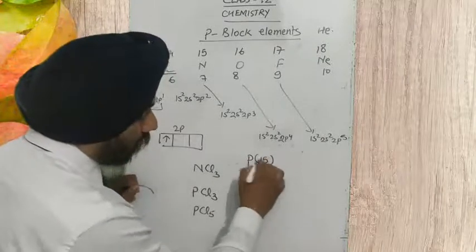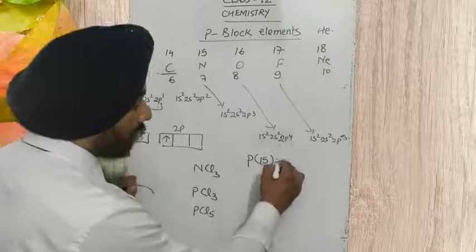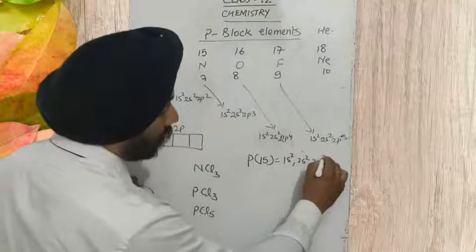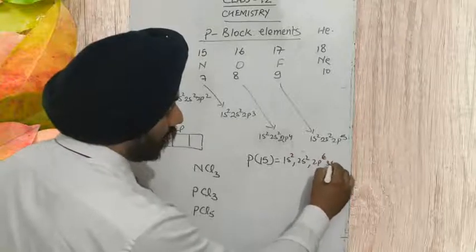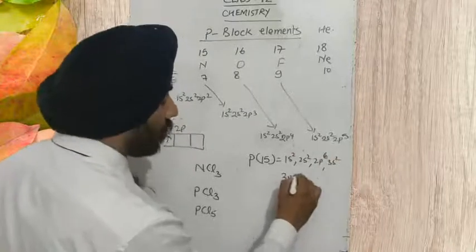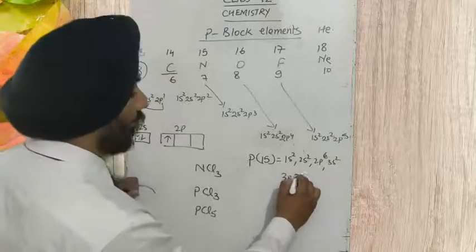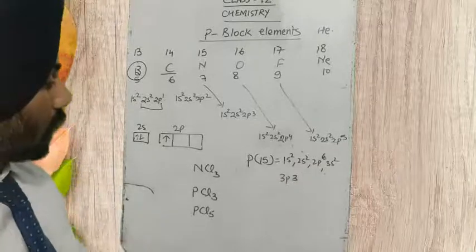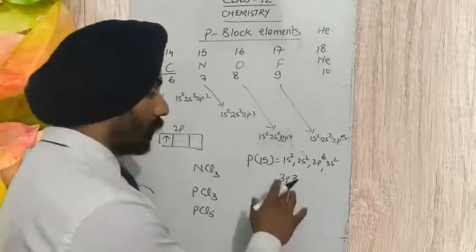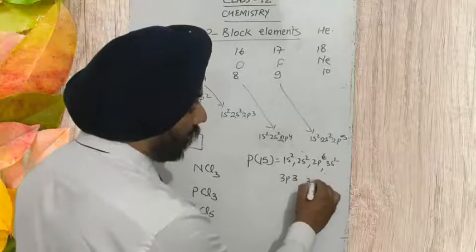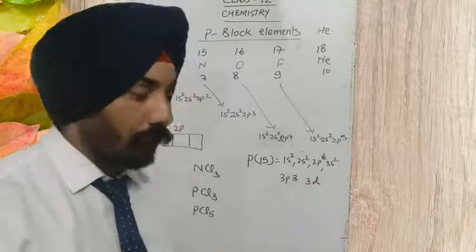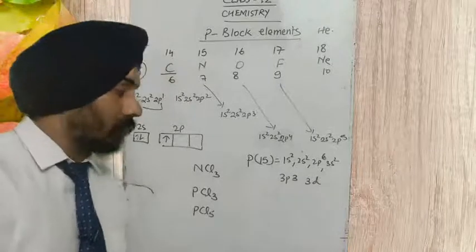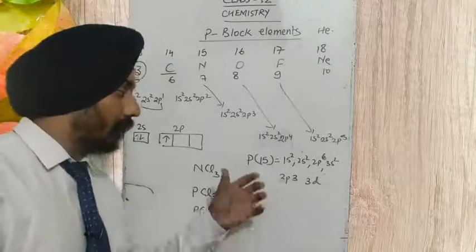The electronic configuration of phosphorus is: 1s², 2s², 2p⁶, 3s², 3p³. And there is also 3d available — the d orbital of suitable energy is available with phosphorus. So phosphorus can expand its electronic configuration of the valence shell into the d orbital as well. Here we have 3s, 3p, and 3d.